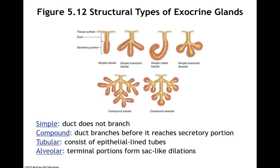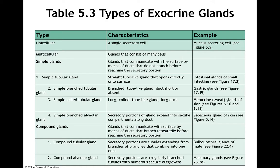In a tubular gland, there are epithelial-lined tubes. In an alveolar gland, there are terminal portions that form a sac-like dilation, similar to what we'll see in the lungs — though the alveoli in the lung are not the same as alveolar exocrine glands. Simple glands include the simple tubular gland, simple branched tubular gland, simple coiled tubular gland, or simple branched alveolar gland. A compound gland could be compound tubular or compound alveolar.